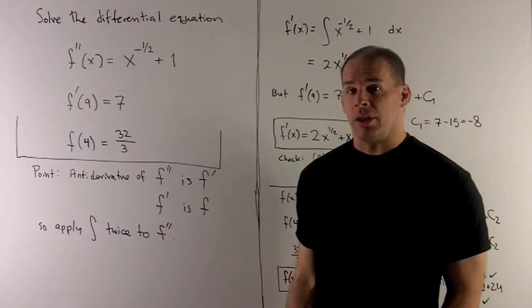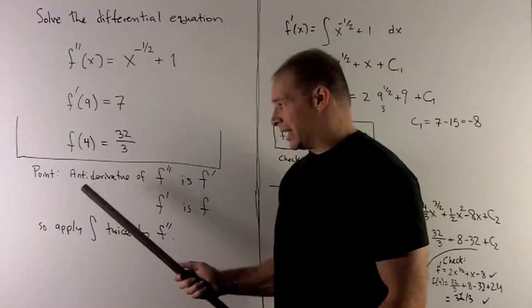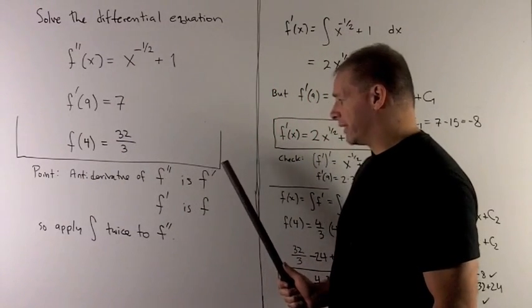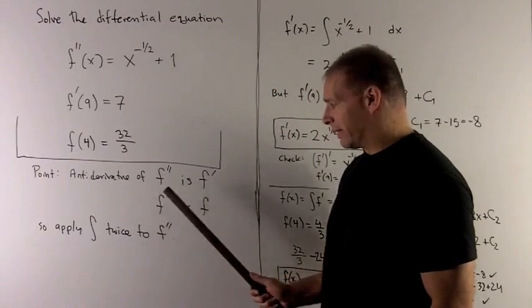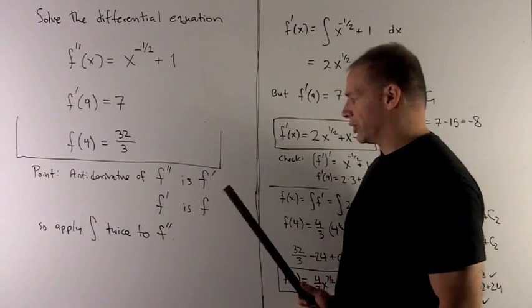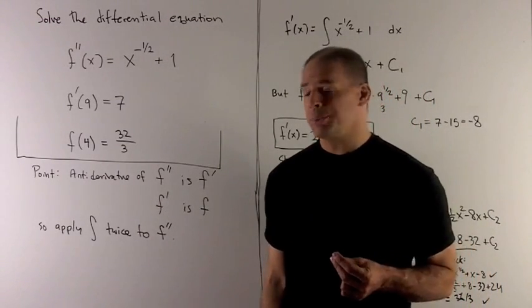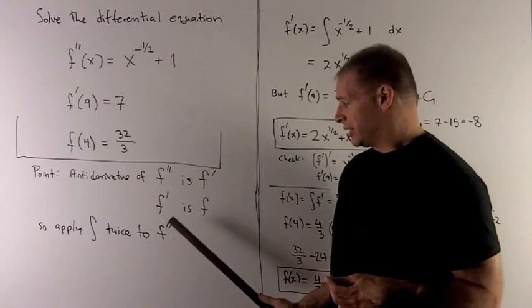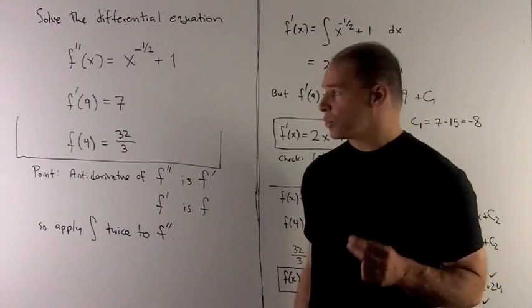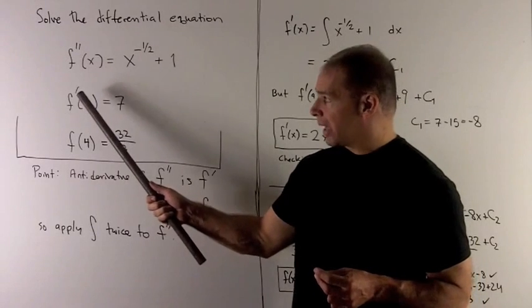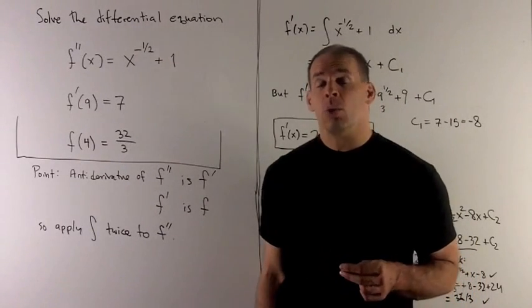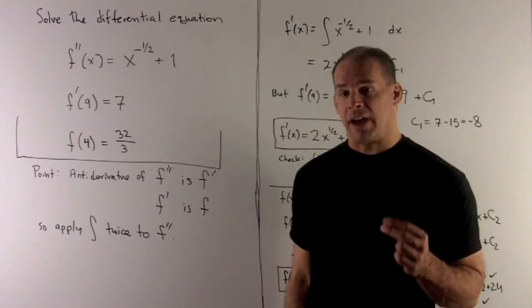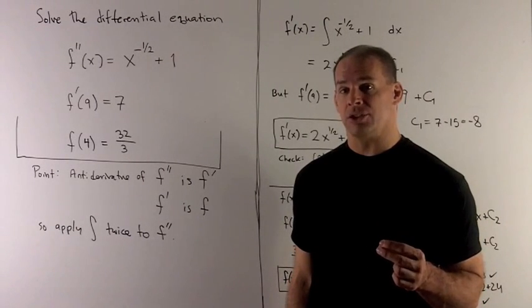So the main idea behind all this is, if I take the antiderivative of the second derivative, I get the first derivative. If I take the antiderivative of the first derivative, I get the original function back. So what we're going to do here is we're going to apply integration twice to the second derivative. And since we're given actual values for f prime and f, we'll be able to solve out the constants of integration to get ourselves to a final function completely in terms of numbers.